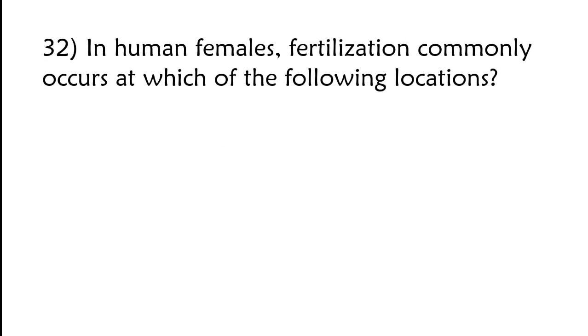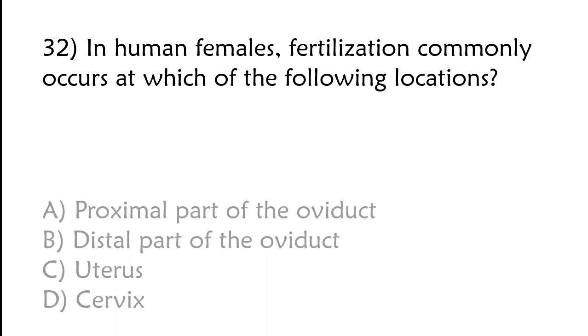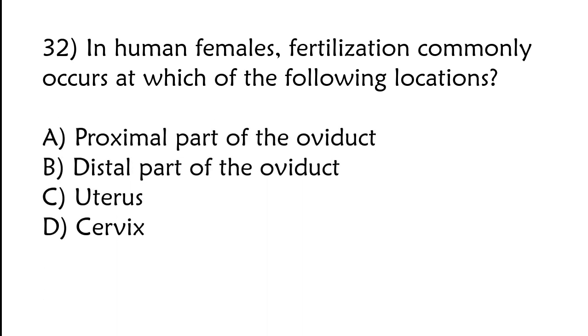In human females, fertilization commonly occurs at which of the following locations? Proximal part of the oviduct, distal part of the oviduct, uterus, or cervix. The correct answer is option B, distal part of the oviduct.